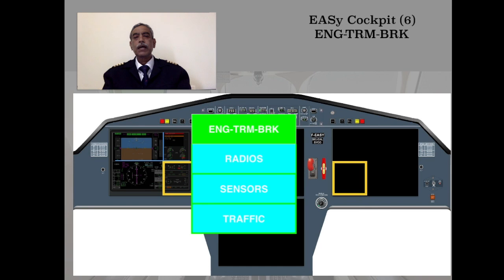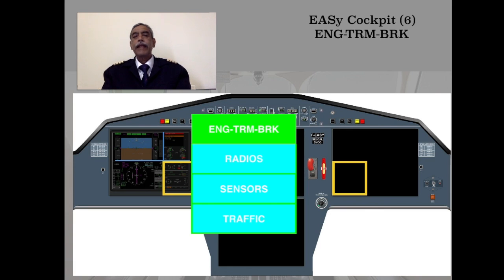You take the cursor to the particular window and a drop-down menu is presented. There are four options in the drop-down menu: the first is Engine Trim Brake, then Radios, Sensors, and Traffic. These are the four options we are going to see in detail, one by one.